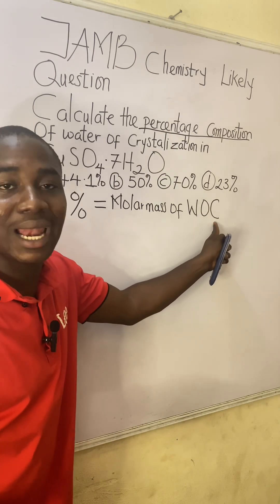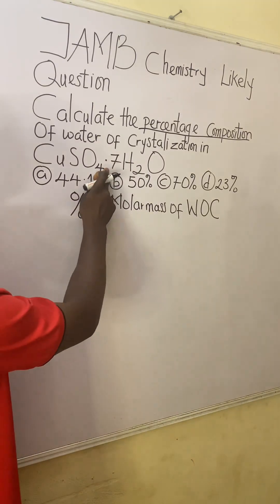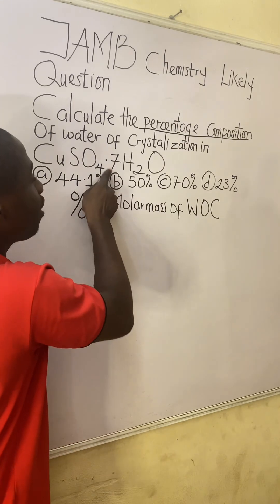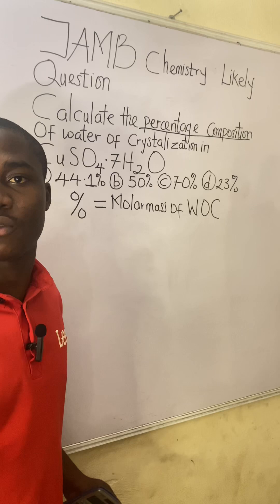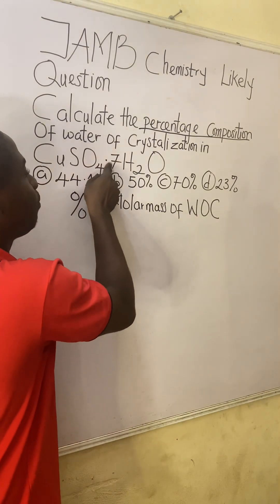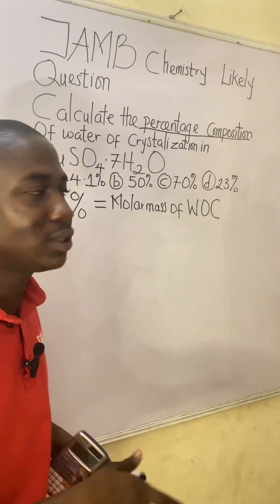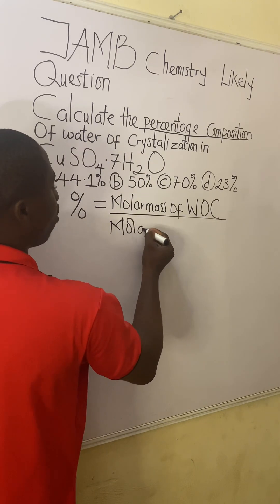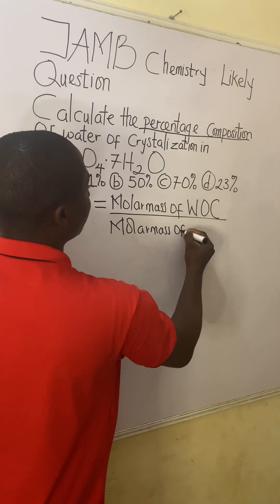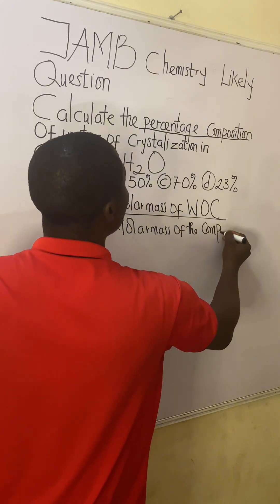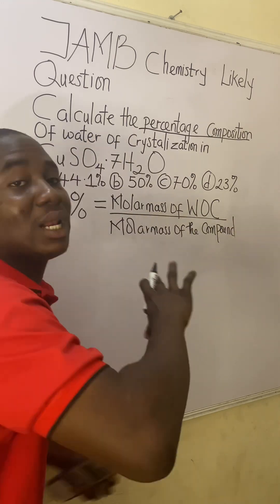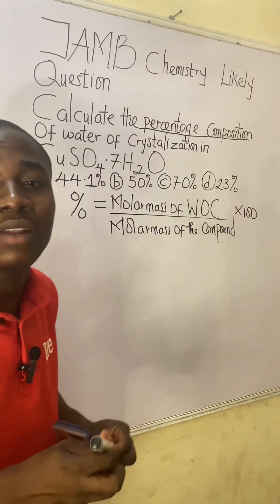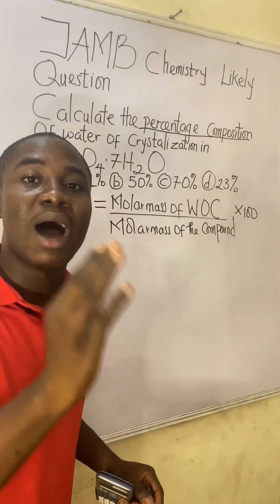The water of crystallization part in this compound is 7H₂O. If it were 20H₂O, that would be the water of crystallization. Anything after the dot is the water of crystallization in this context. So the formula is: molar mass of water of crystallization divided by molar mass of the full compound, times 100, since we are calculating a percentage.